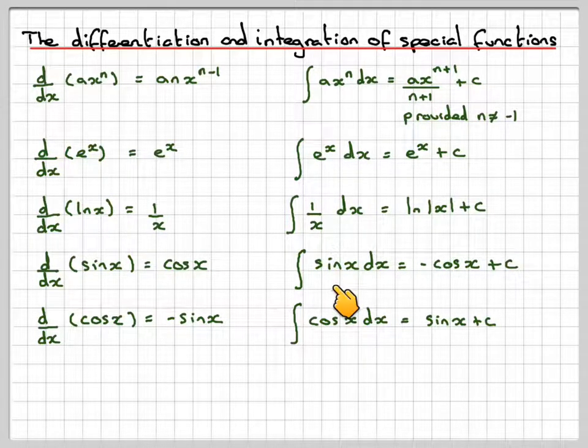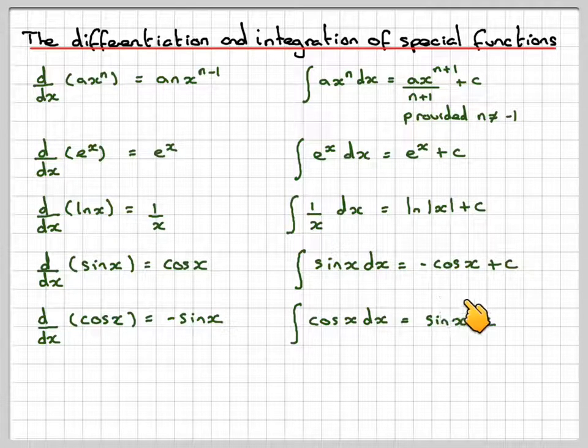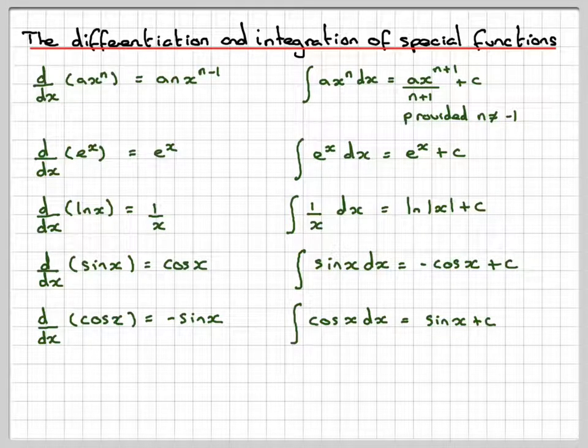Integrating, if you integrate sin, you get -cos. Integrate cos, you get sin. Integrate -sin, you're going to get cos, integrate cos, and you get back to sin. So it goes around in a circle.